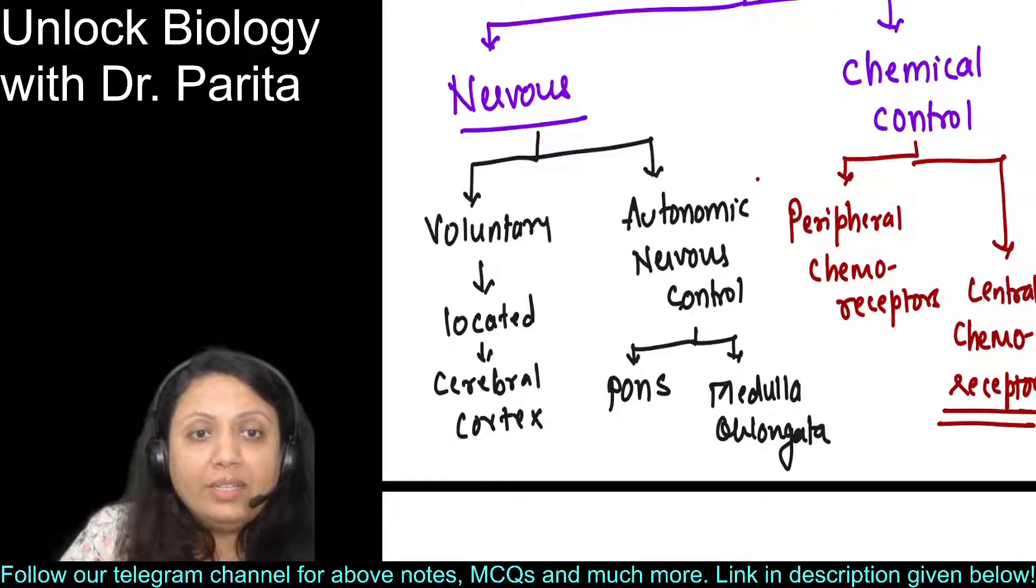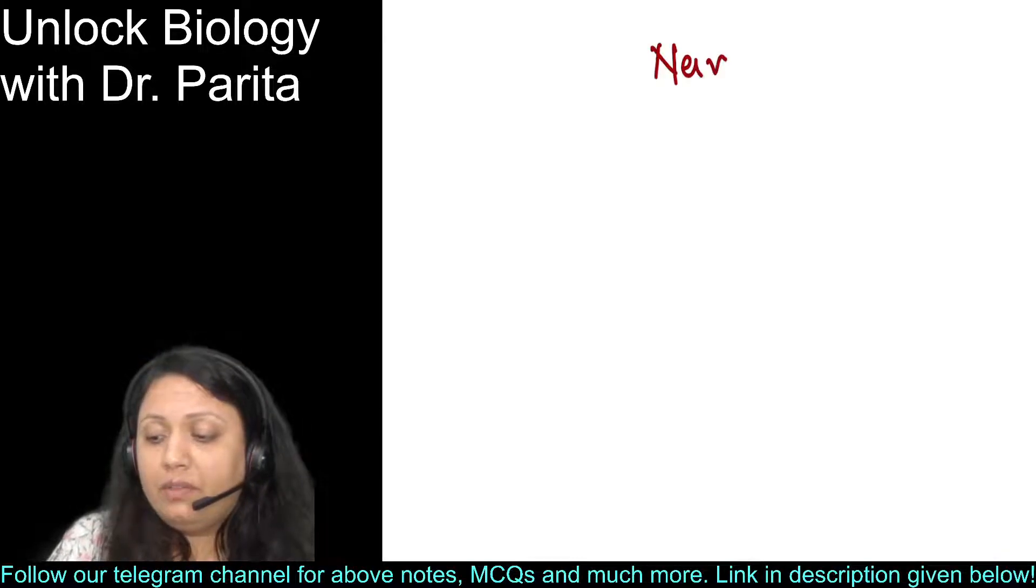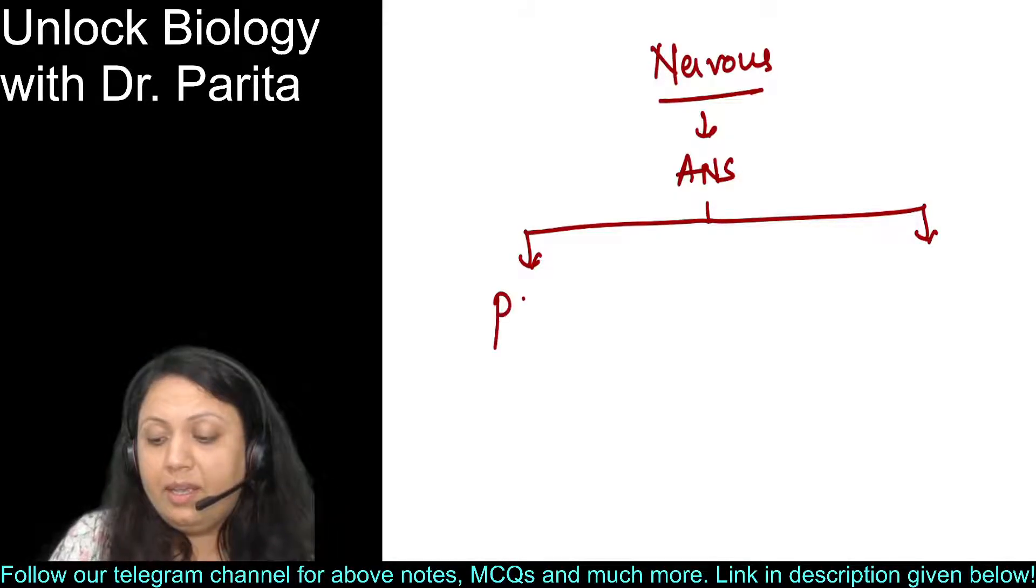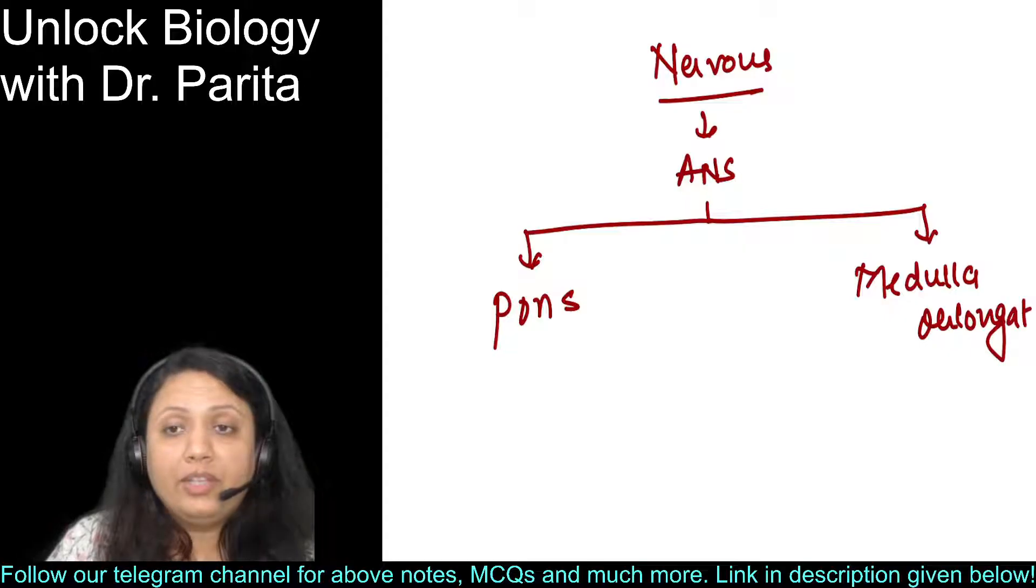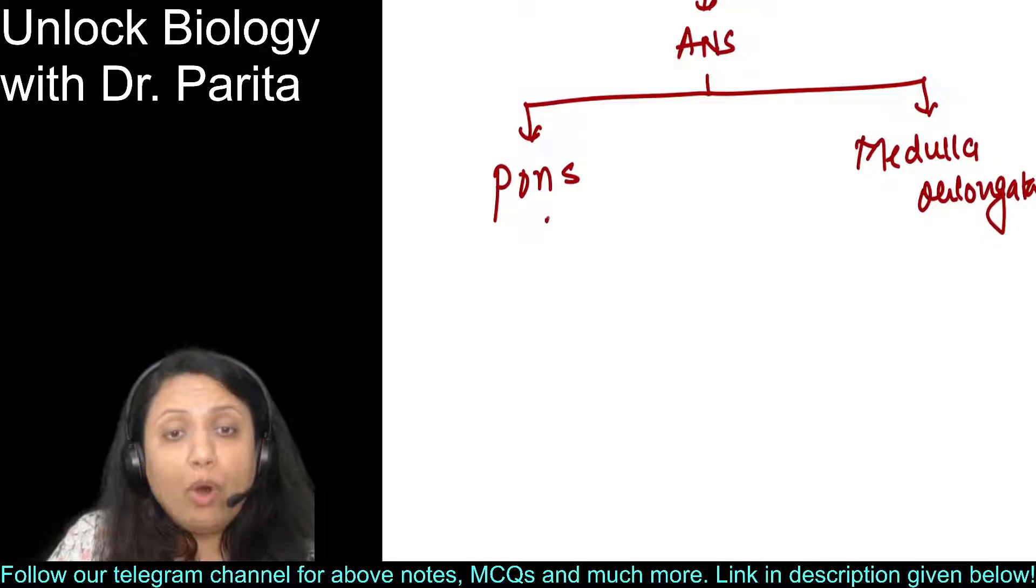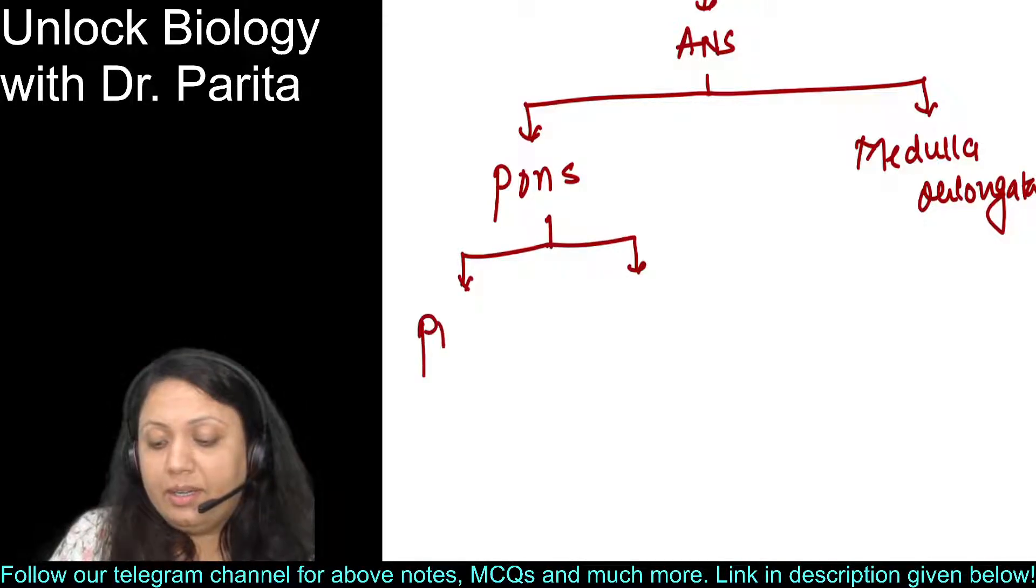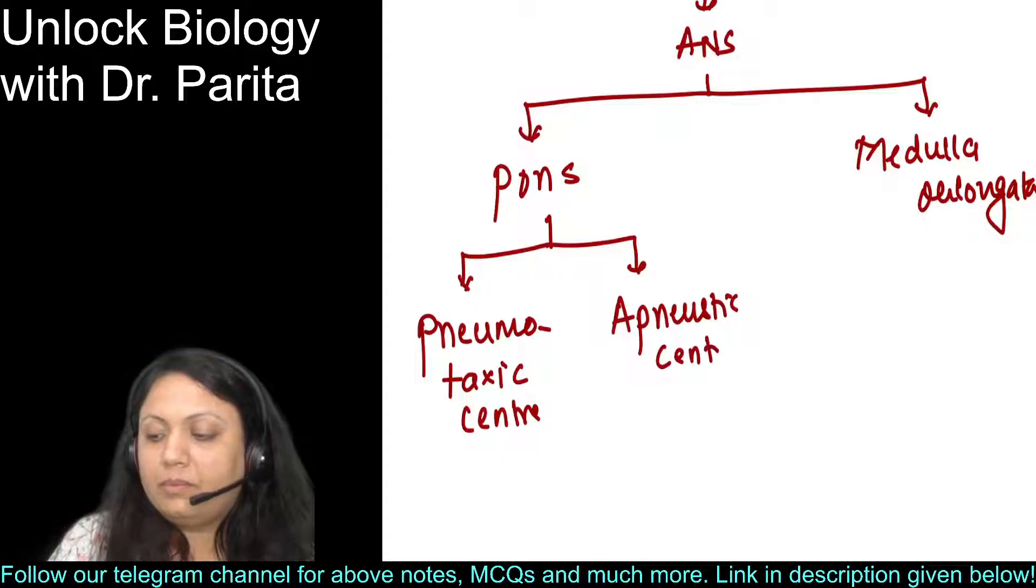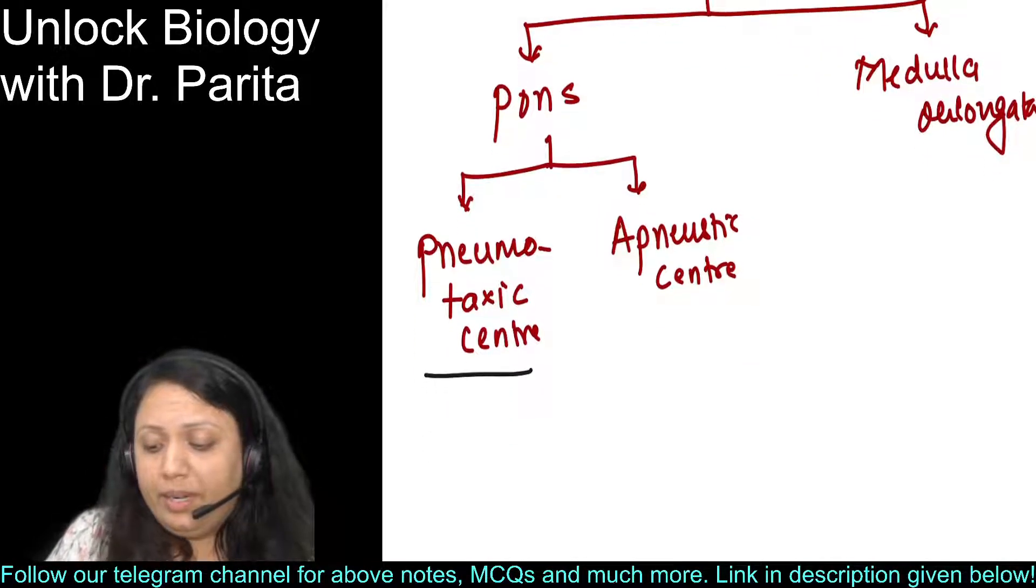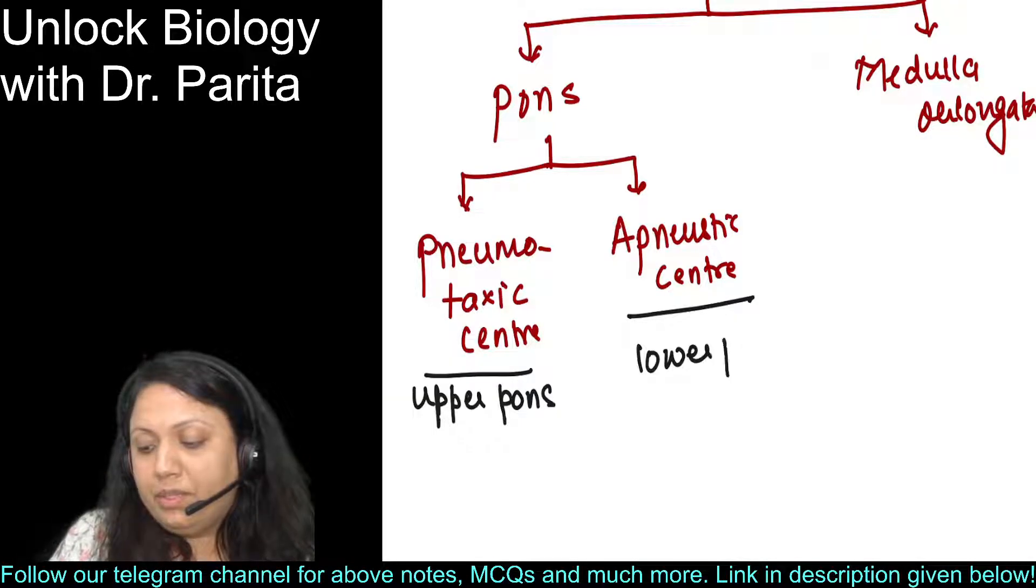Now let us talk about nervous control. I am going to talk only about the involuntary control - that is your autonomic nervous system control. You have two organs: pons and medulla oblongata. Remember, keywords are very important. There are two centers in pons. One mentioned in NCERT is the pneumotaxic center, and one is the apneustic center. The pneumotaxic center is located in upper pons. The apneustic center is located in lower pons.